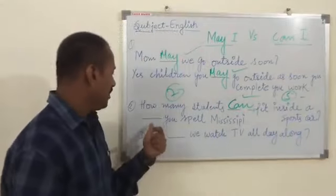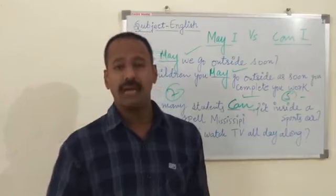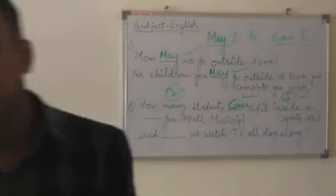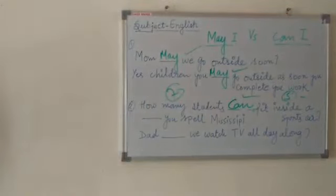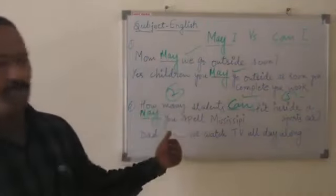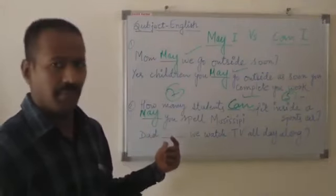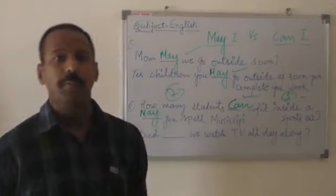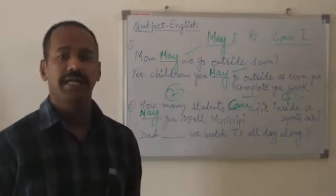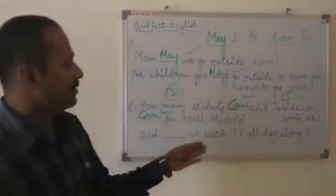Next example: 'Can you spell Mississippi?' Suppose I am not good at spelling and have been learning to spell words correctly for years. If I use 'may' — 'May you spell Mississippi?' — this is not meaningful. May denotes permission, and there is no role of permission in spelling a word. It is connected with capability and possibility. So here again it will be 'can': 'Can you spell Mississippi?' Now this sentence is correct.